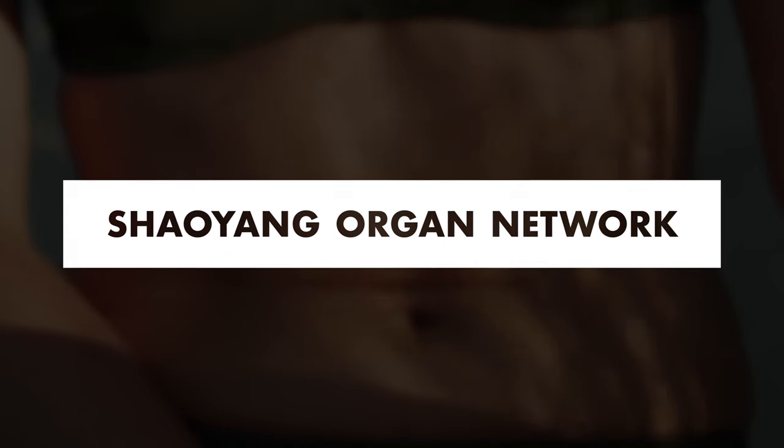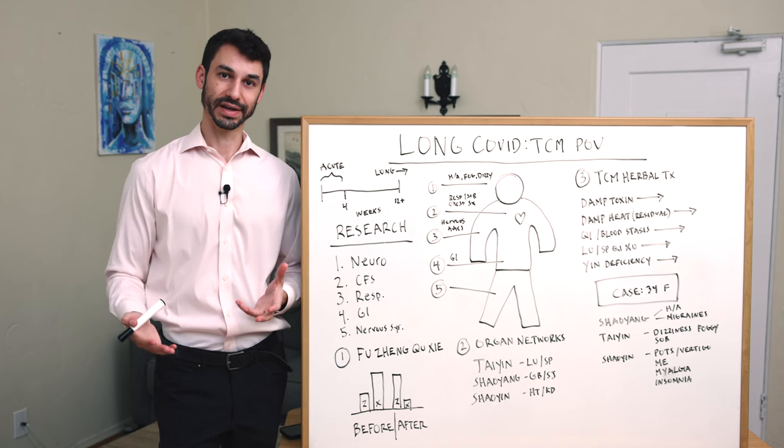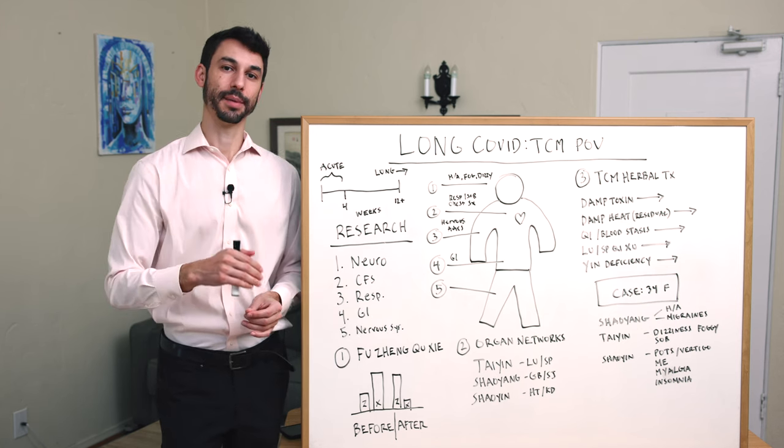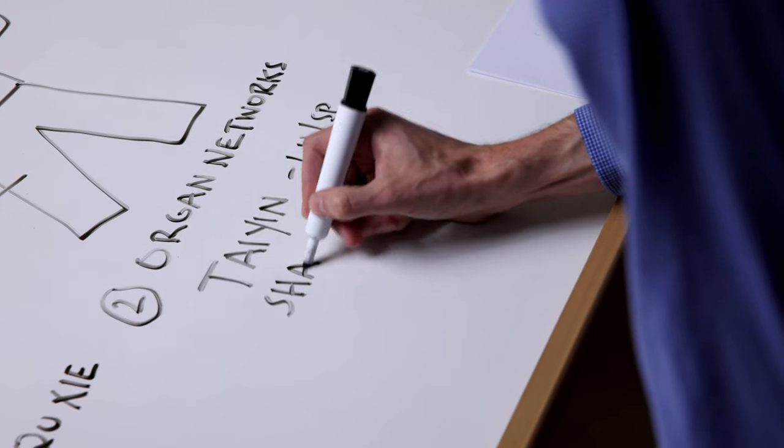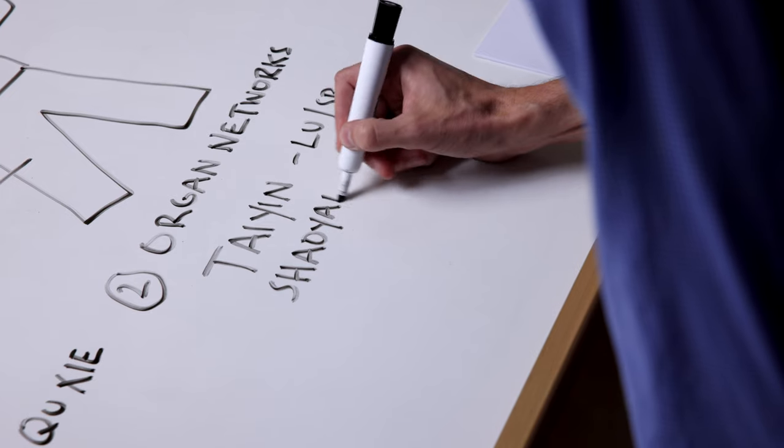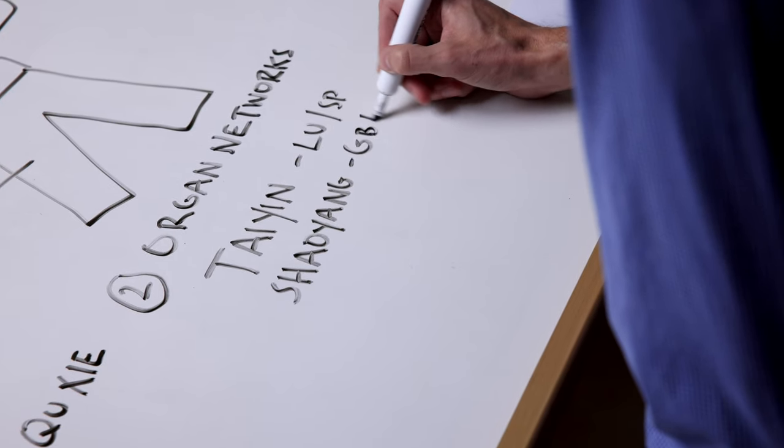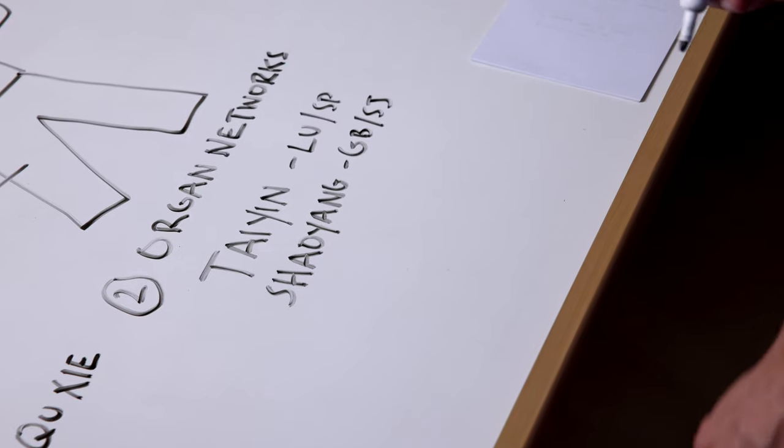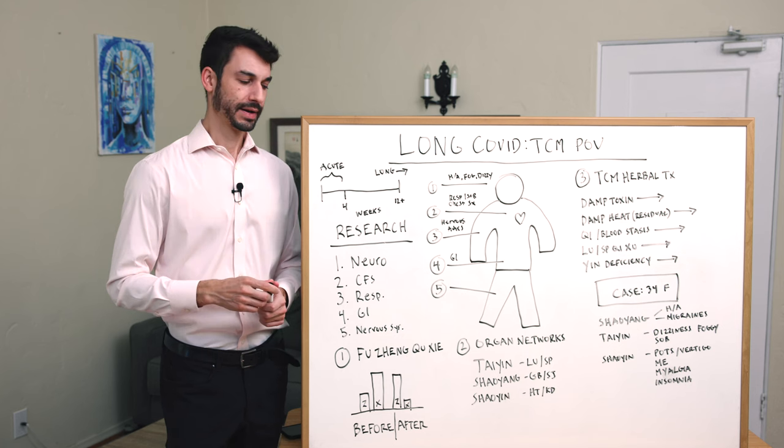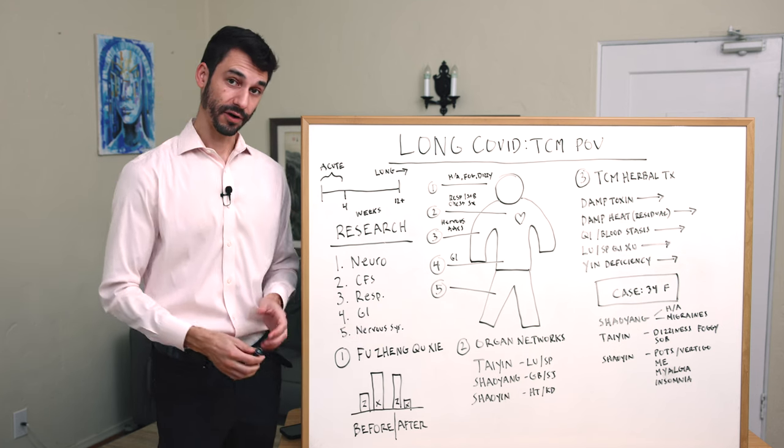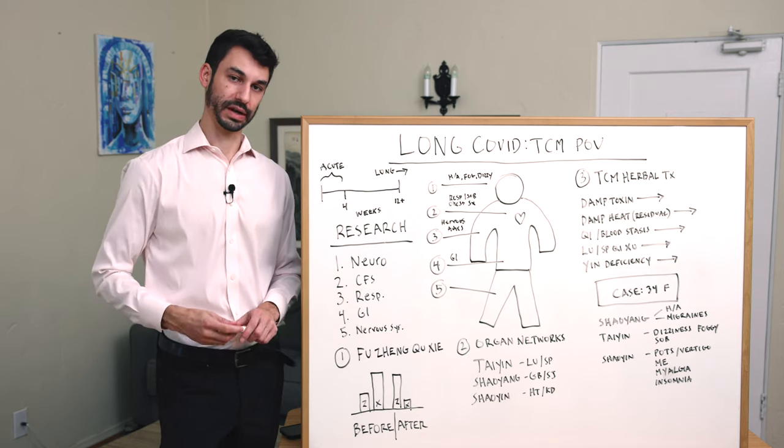The Shaoyang organ networks are the gallbladder and the triple warmer. A way to conceptualize these is that these organ networks in TCM are in charge of inflammatory conditions. When someone comes in and we are treating their acid reflux or bronchitis or COVID where they're having dry cough, sore throat, ear aches, ear-nose-throat issues, and brain fog, we're often treating these organ networks with the tai-in organ networks.